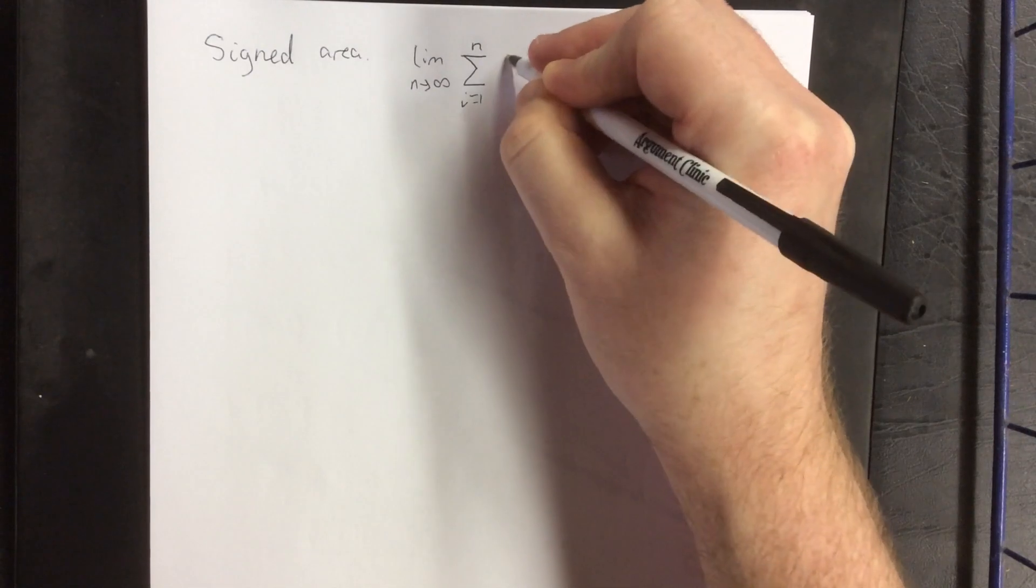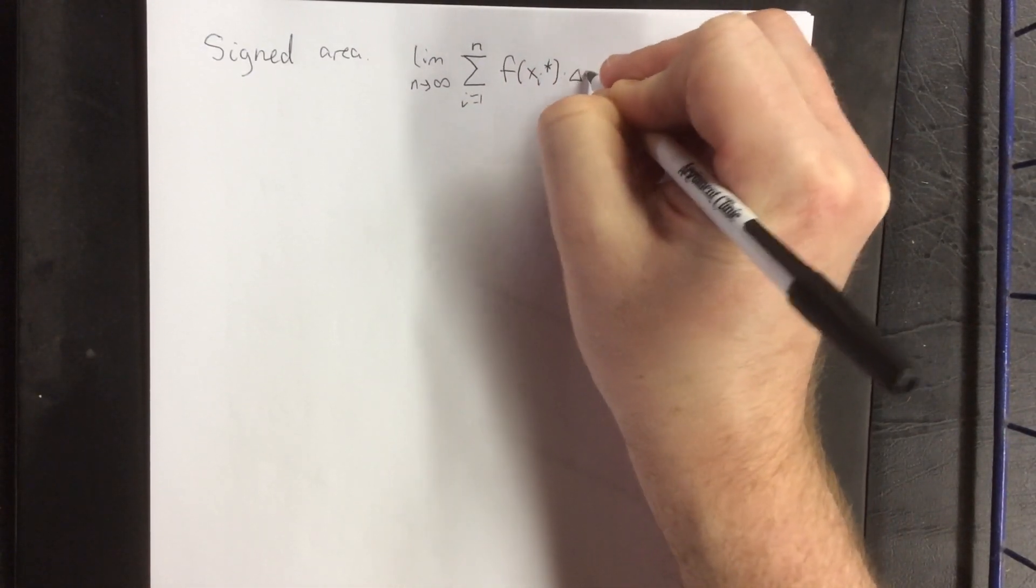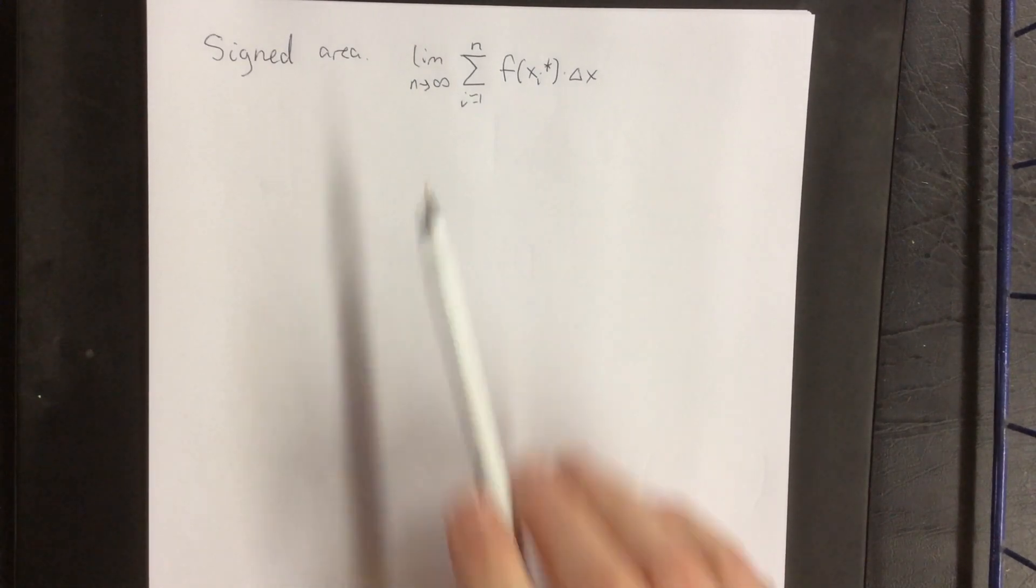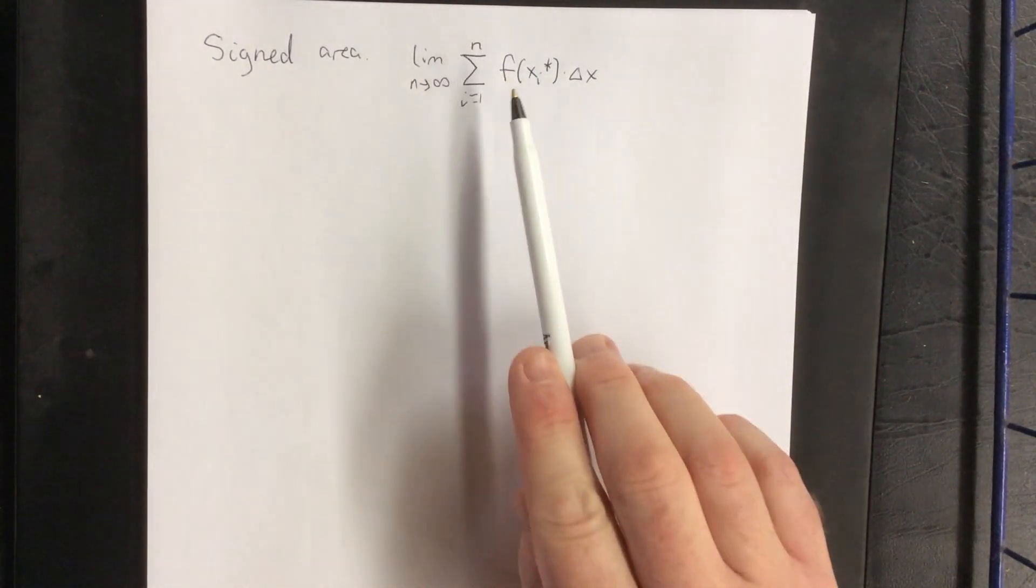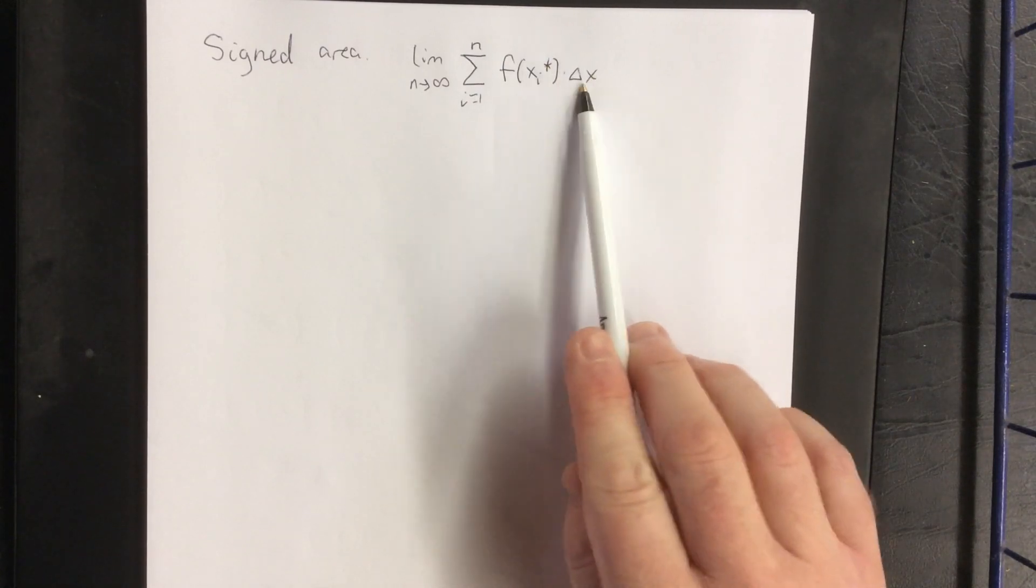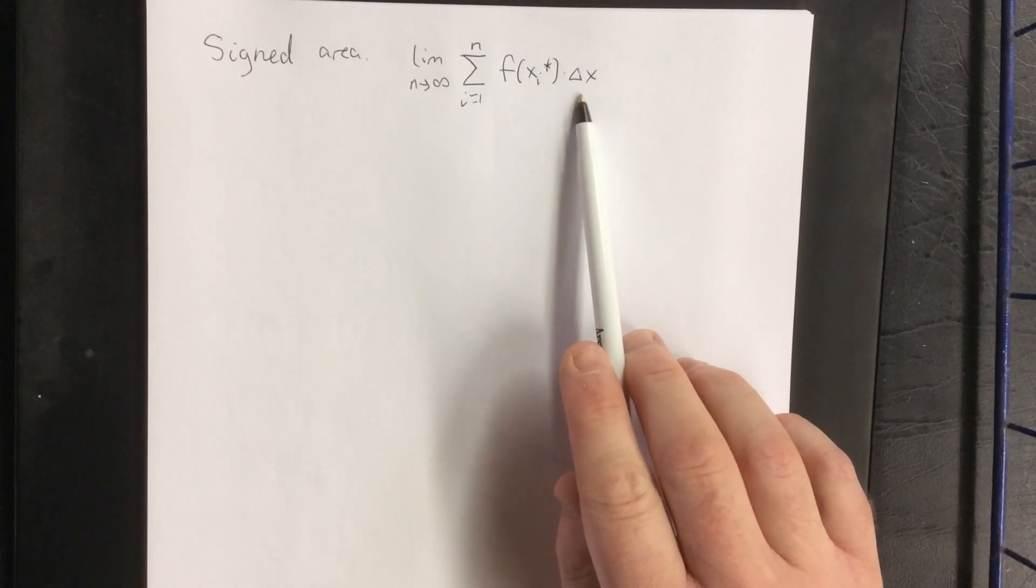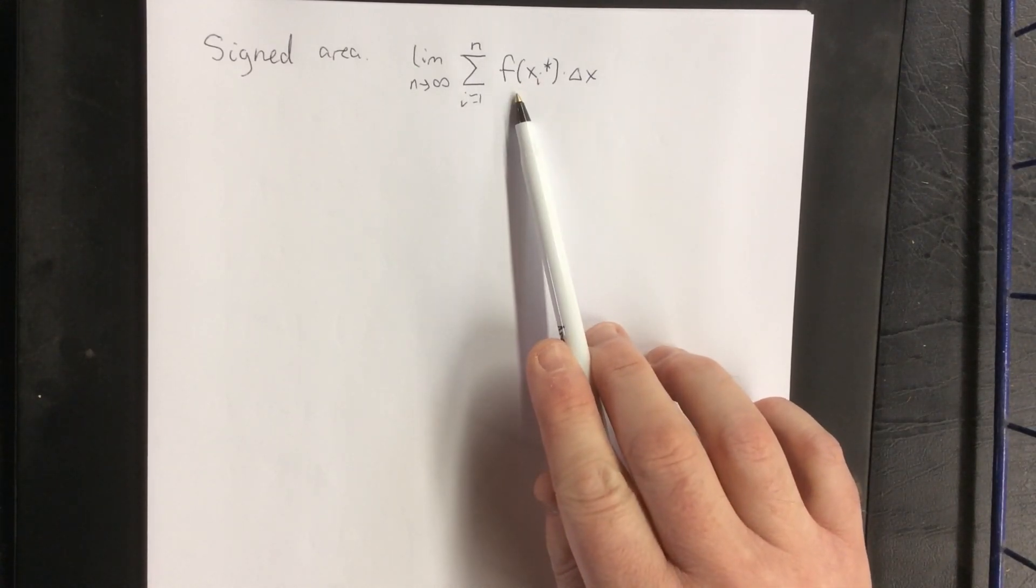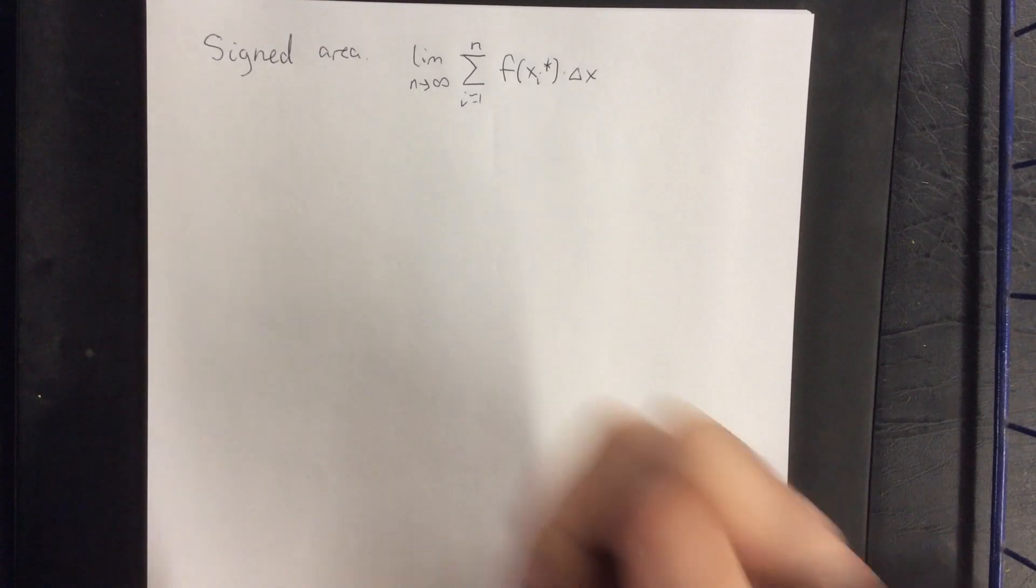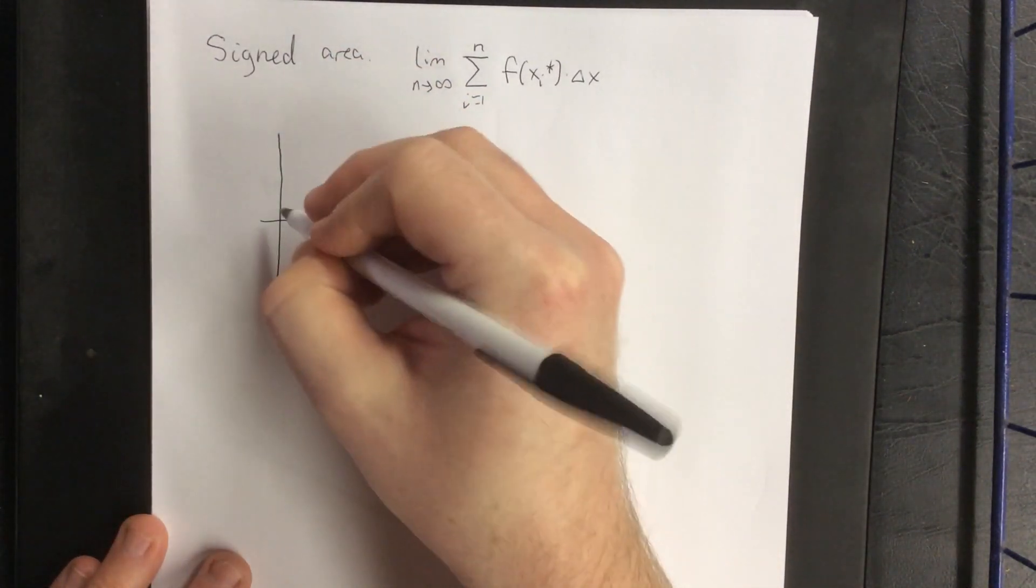So the expression that we had for a Riemann sum is the following. This is the limit as n goes to infinity of the sum from i equals 1 to n of f of x sub i star times delta x. The way that we define delta x guarantees that it's going to be a positive value. However, this is simply referring to a y value for a function. A y value for a function doesn't necessarily have to be a positive value.